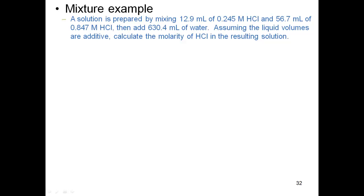Let's look at a calculation. A solution is prepared by mixing 12.9 milliliters of 0.245 molarity HCl and 56.7 milliliters of 0.847 molarity HCl, and then we add 630.4 milliliters of water. Assuming the liquid volumes are additive, and we can do that in this case since we're talking very dilute aqueous solutions, we want to calculate the molarity of HCl in the resulting solution.